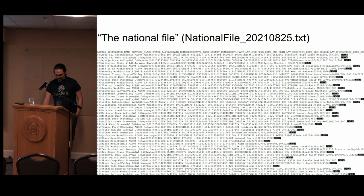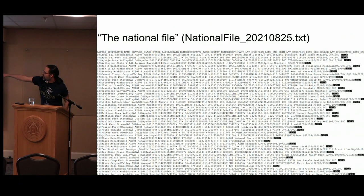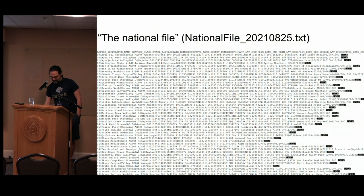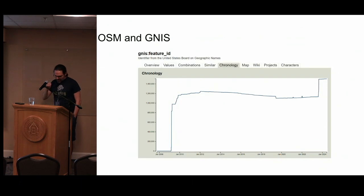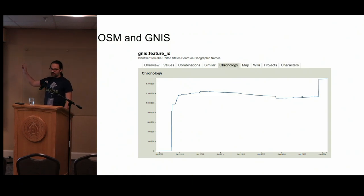Interacting with them one at a time is an enormous bother. If you want to do something more serious, they have published what they call the national file. It is updated every two months. It is a pipe-delimited file — the first feature ID is 399 — and it has the name, the state, various lat-long coordinates, the date when it went in, the date when it was updated, and fields like that. There are two and a half million entries in the national file. On OpenStreetMap, we have about a million and a half items that have a feature ID associated with GNIS.